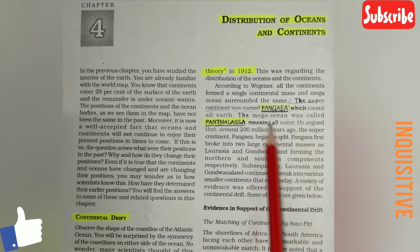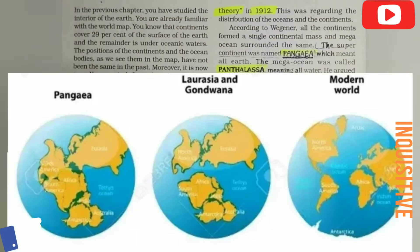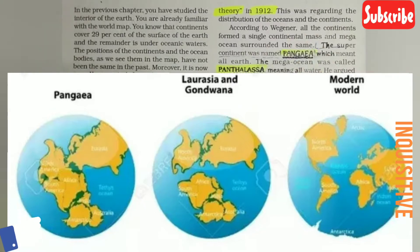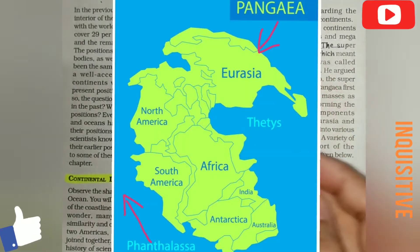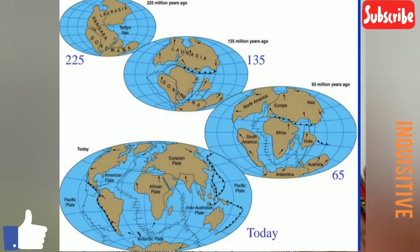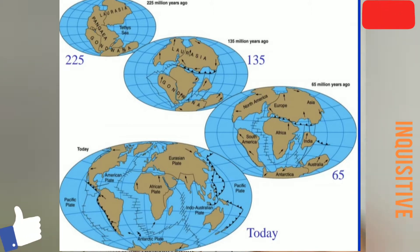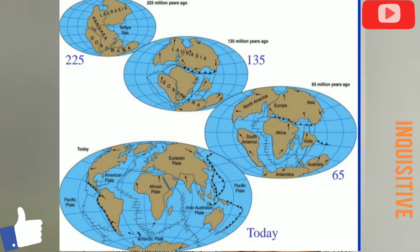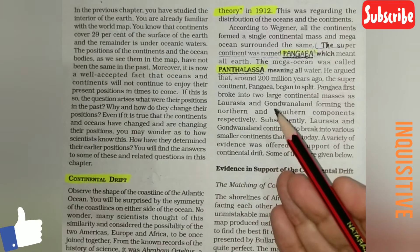As you have already studied, Pangea is the supercontinent and Panthalassa means the mega ocean. The Continental Drift Theory was given in 1912, providing evidence and proof of how the supercontinent Pangea was formed about 200 million years ago, how Pangea split through plate tectonics, and how continents drifted toward the North or South Pole.